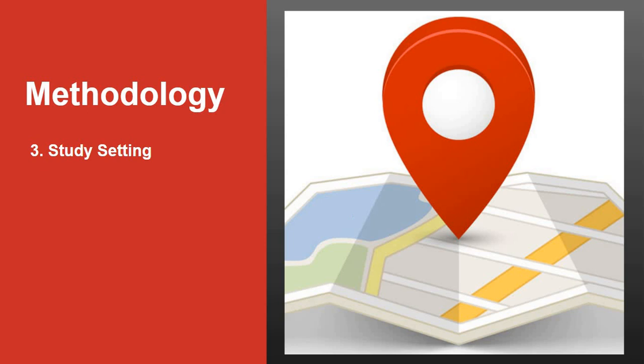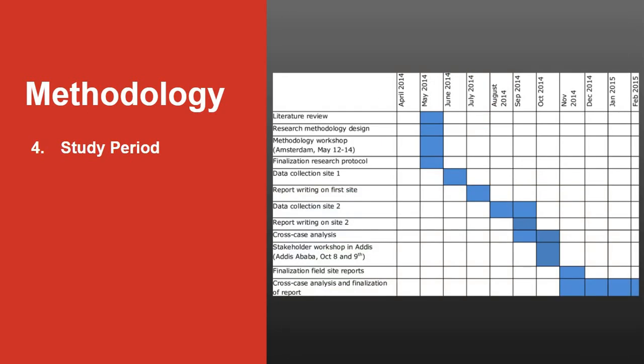Number 3 in methodology is study setting. You need to explain where the study population is from and where the study is conducted. Next is the study period which should mandatorily include the data collection period apart from other time periods required. You can use Gantt charts to represent the timelines of research.